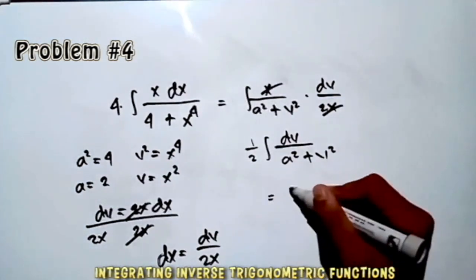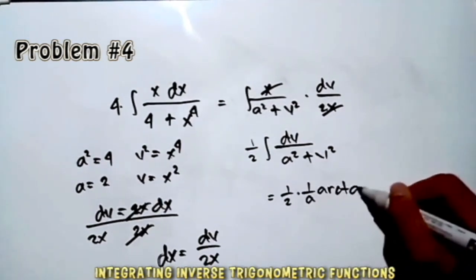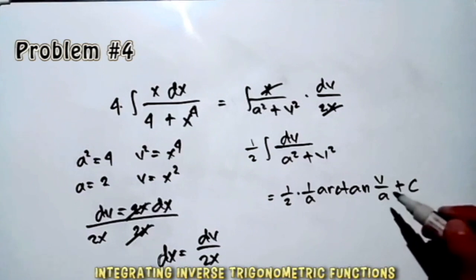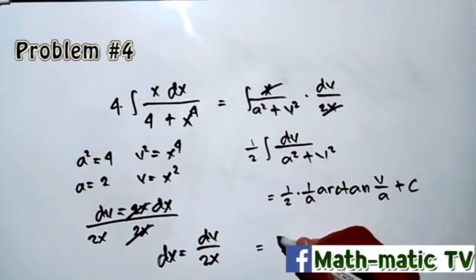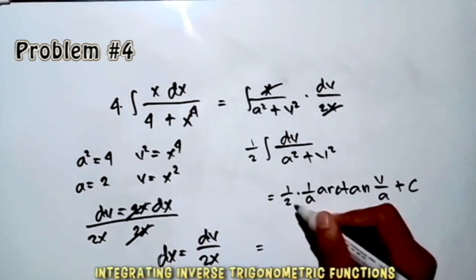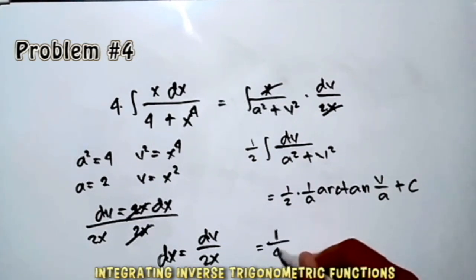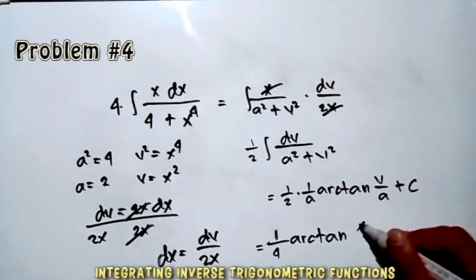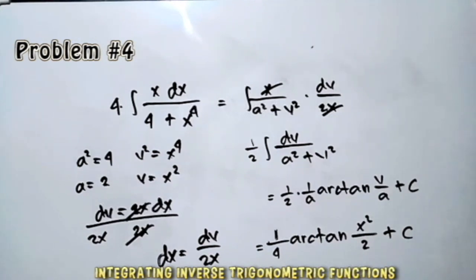Therefore this equals (1/2) times (1/a) arctan(v/a) + C. Since v = x² and a = 2, we get (1/2) times (1/2) = 1/4. So our final answer is (1/4) arctan(x²/2) + C.